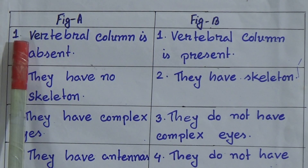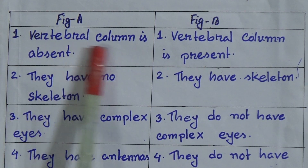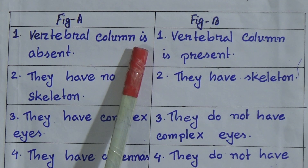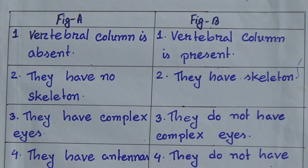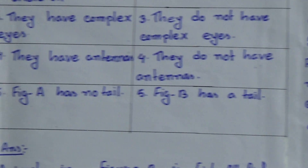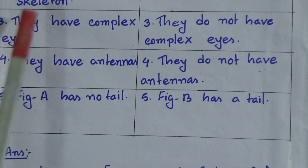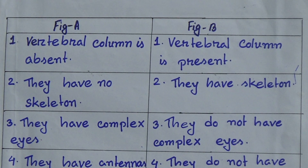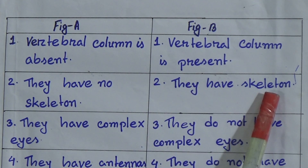In figure A, the vertebral column is absent, but in figure B, the vertebral column is present. In figure A, they have no skeleton, whereas in figure B, they have a skeleton.